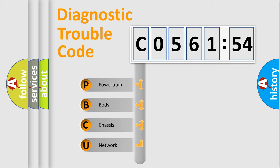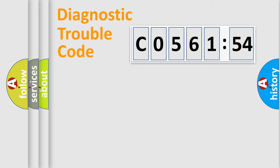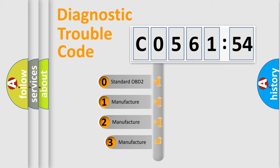We divide the electric system of an automobile into four basic units: powertrain, body, chassis, and network. This distribution is defined in the first character code.